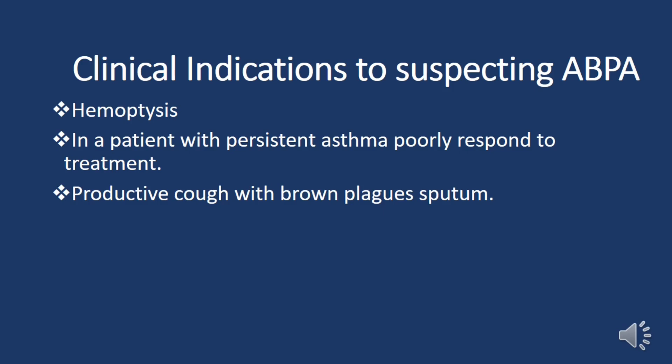Clinical indications for suspecting ABPA include: firstly, hemoptysis or coughing up blood, especially in patients with persistent asthma who show poor response to standard treatments. Secondly, a productive cough accompanied by brownish plaques in the sputum — composed of mucus and fungal elements — indicating aspergillus colonization. Clinicians should maintain a high index of suspicion for ABPA in such patients and consider appropriate diagnostic evaluation.